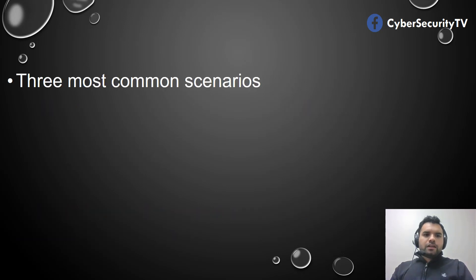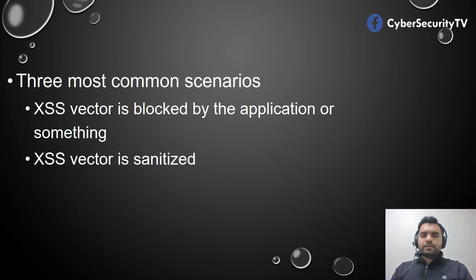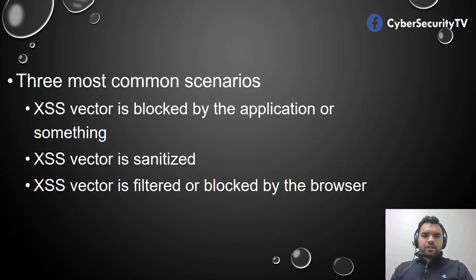There are three most common scenarios for how XSS vectors are blocked. For example, you are doing pen testing and trying to do a cross-site scripting attack but your attack is not successful because it's blocked by the application. The application has a regex or some sort of validation which blocks your attack vector. The second thing is it's sanitized — not blocking the vector but sanitizing it, for example converting a less-than sign in the script tag into something else.